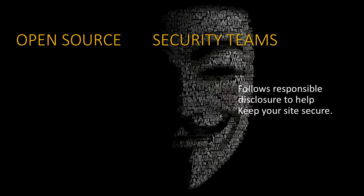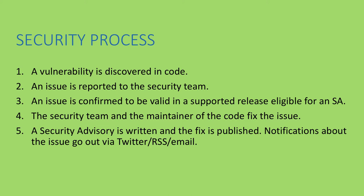Open source security teams follow responsible disclosure to help keep your site secure. A vulnerability gets discovered in code — sometimes by a site maintainer, sometimes a security researcher, sometimes by accident. It gets reported to a security team, which validates the issue and confirms they're going to fix it. For Drupal, you've got to have a stable module with a stable release to be opted into security team coverage. The security team and maintainer work together to fix the issue, propose a patch, review the patch, write a security advisory, and then on a Wednesday we publish all of this at the same time: the code, the new release, the security advisory, and announcements via RSS, email, and Twitter.